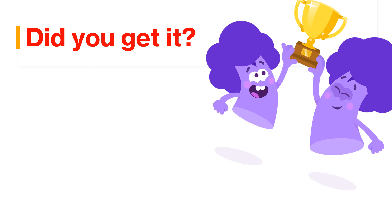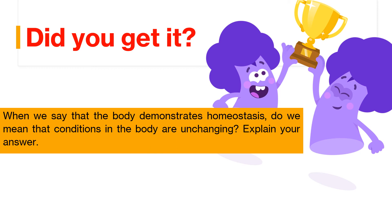Now let's test our knowledge. The first question: when we say that the body demonstrates homeostasis, do we mean the conditions in the body are unchanging? The answer is no. By saying homeostasis is occurring in the body, we mean that internal conditions vary within a narrow and regulated range.